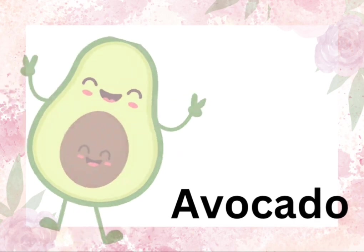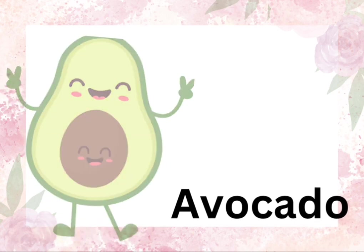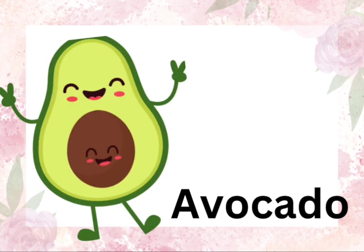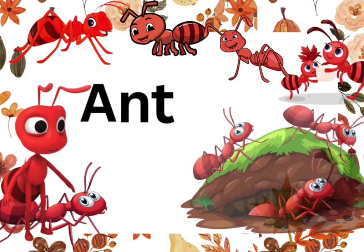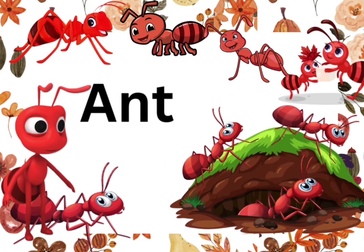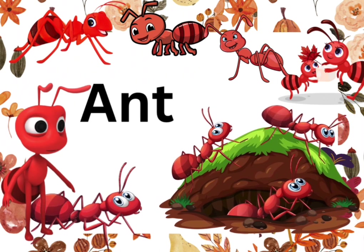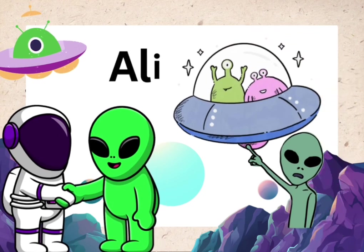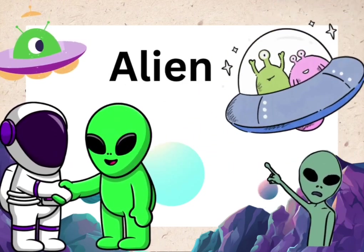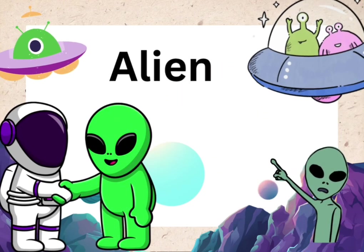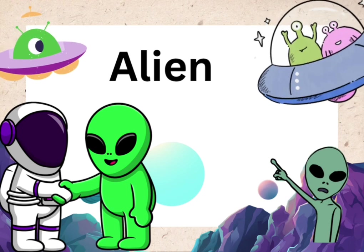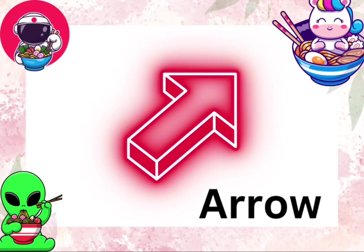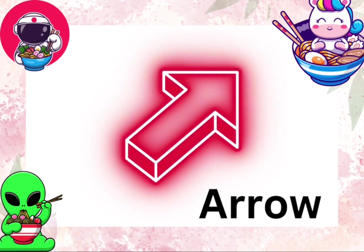A is for avocado, a a avocado. A is for ant, a a ant. A is for alien, a a alien. A is for arrow, a a arrow.